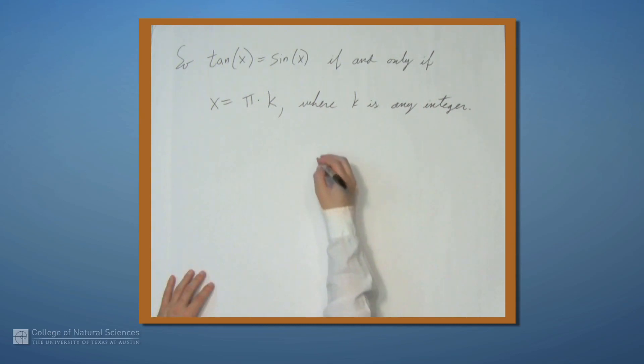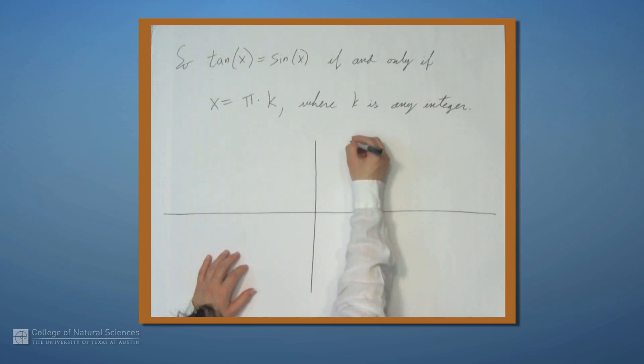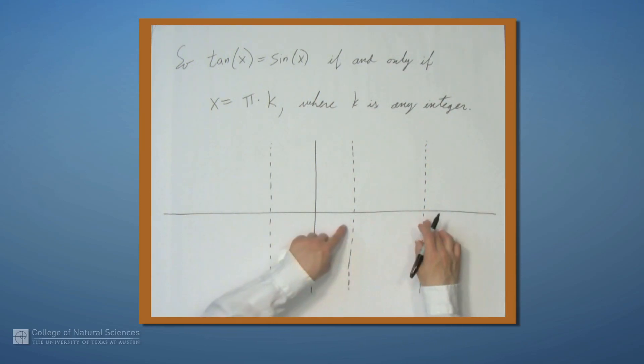Now I think it's worth trying to see what's going on here graphically. So let's sketch this. So we know that tangent has asymptotes at pi over 2, negative pi over 2, and then 3pi over 2, and all these gaps have length pi. So we'll sketch these asymptotes.